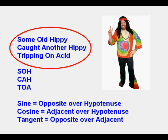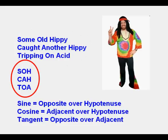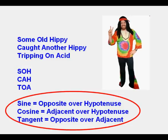A sentence that helps me remember these relationships is some old hippie caught another hippie tripping on acid. So the letters are SOH, CAH, and TOA. And from here we can go to sine equals opposite over hypotenuse, cosine equals adjacent over hypotenuse, and tangent equals opposite over adjacent.